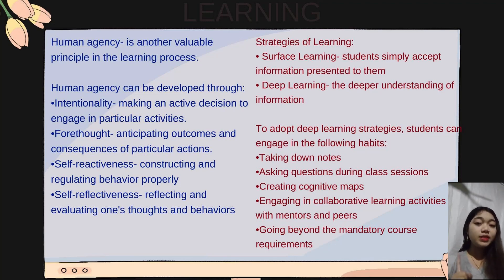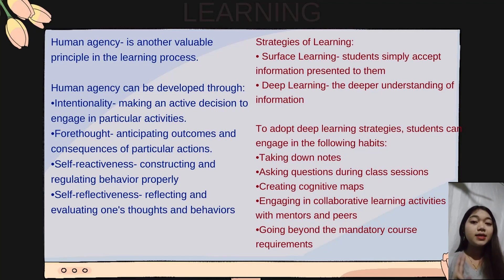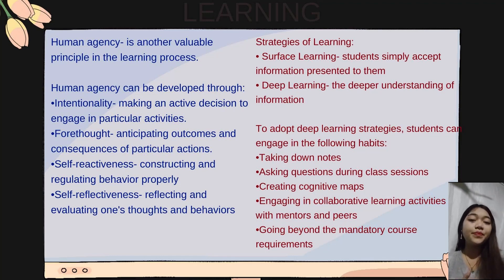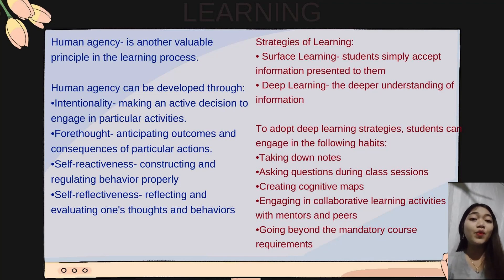First, deep learning: the deeper understanding of information by creating significant, meaningful links across different concepts and how it can be applied in practical ways. Second, surface learning: students simply accept information presented to them and memorize it in an isolated and unlinked manner. To adopt deep learning strategies, students can engage in the following habits: taking down notes, asking questions during class sessions, creating cognitive maps, and engaging in collaborative learning activities with mentors and peers.